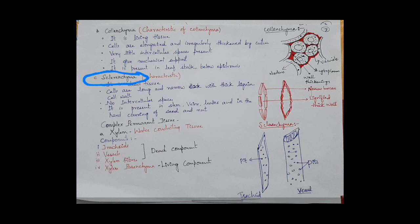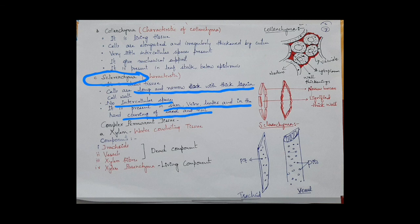The third type of simple permanent tissue is sclerenchyma. The characteristics of sclerenchyma: it is a dead tissue because it loses the protoplasm. The cells are long, narrow, and the wall is very thick, made up of lignin. No intercellular spaces are present. It is present in stems, veins of leaves, and in the hard covering of seeds and nuts.